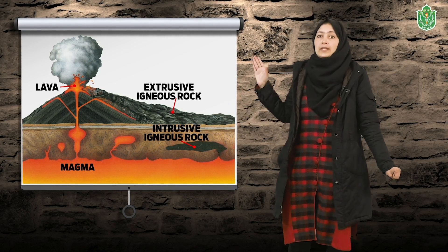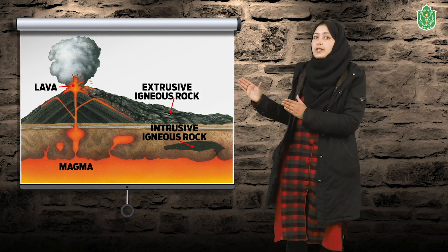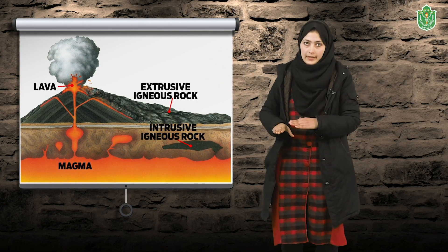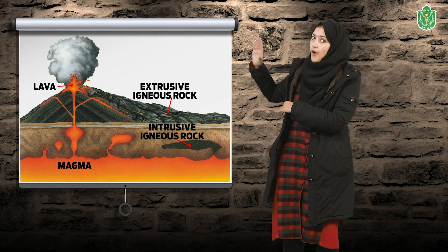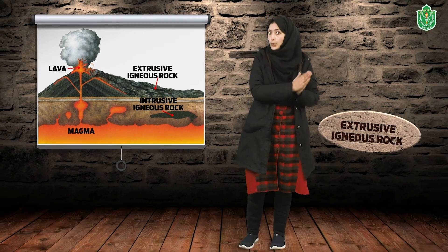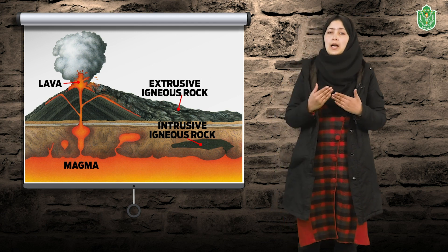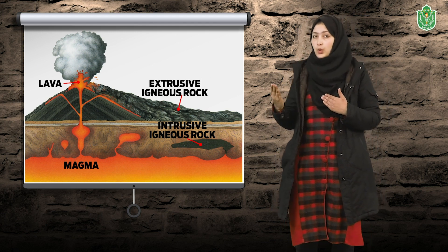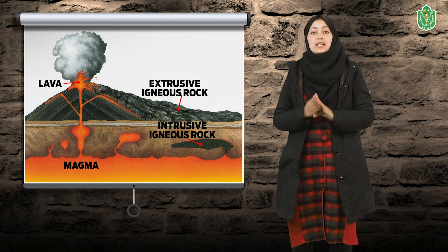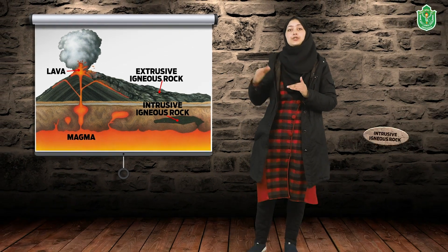These igneous rocks play a very important role in our life. We have different types of igneous rocks formed either on the surface or inside the surface. The rocks which are formed on the surface of the earth are called extrusive igneous rocks. Sometimes magma is not able to come out and settles below the surface of the earth — such igneous rocks take thousands of years to cool down and they are called intrusive rocks.